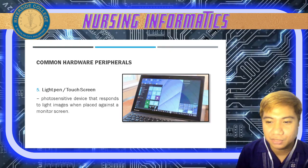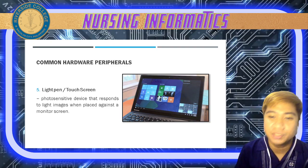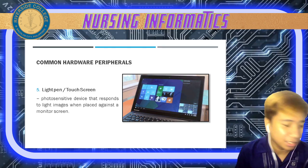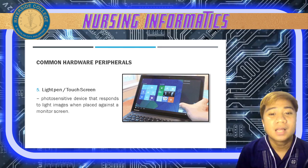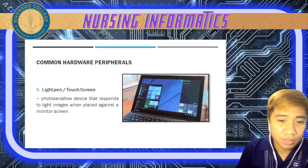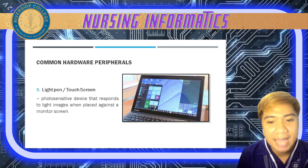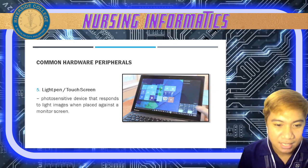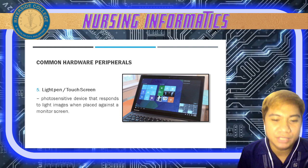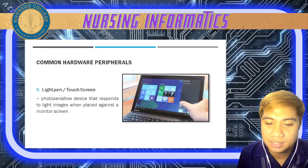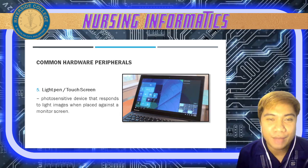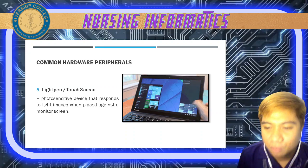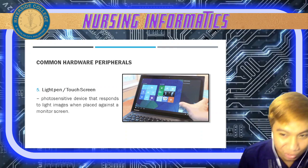We also have the light pen and touch screen. Light pens are photosensitive devices that respond to light images when placed against your monitor screen. Touch screen technology involves the use of a special filter and monitor screen to sense the pressure of the fingers, which can signal the computer to initiate actions.